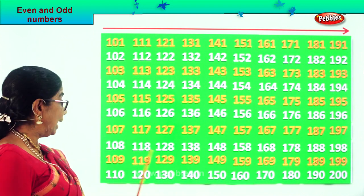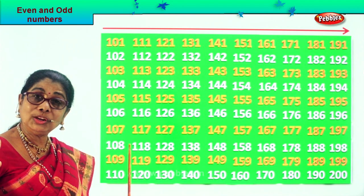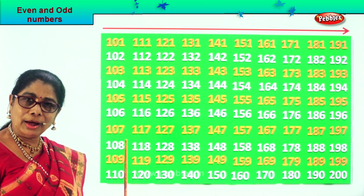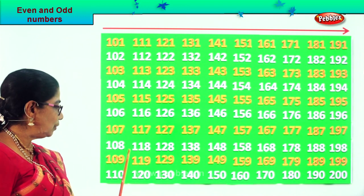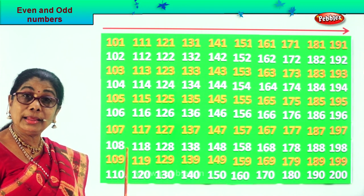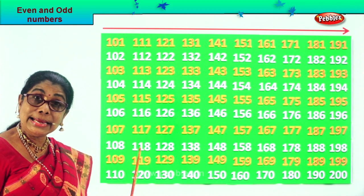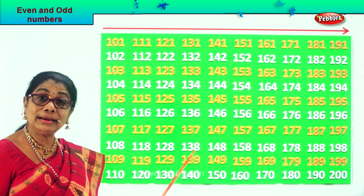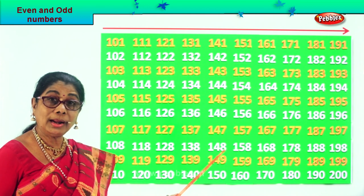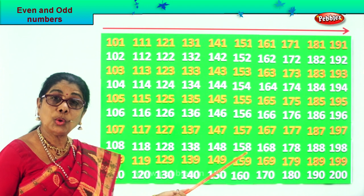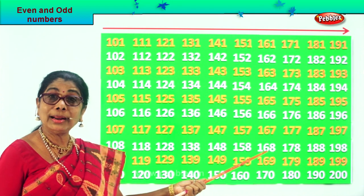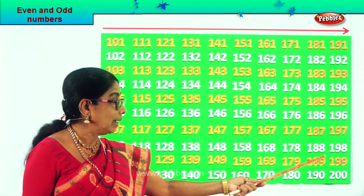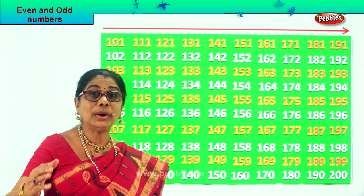All numbers ending in 8: 8, 18, 28, 38, 48, 58. Now here in 100 — 108, 118, 128, 138, 148, 158, 168, 178, 188, 198.